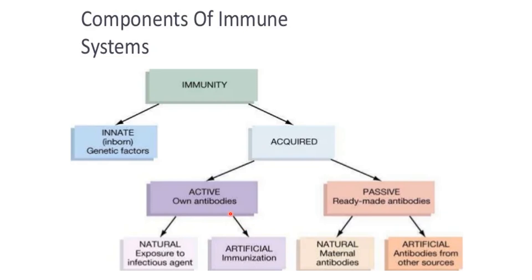Passive immunity can also be natural or artificial. Natural passive immunity involves maternal antibodies transferred to the baby. IgA from breast milk provides the baby with natural passive immunity.